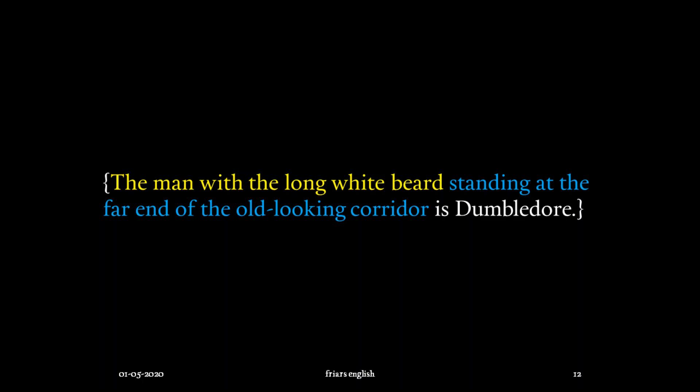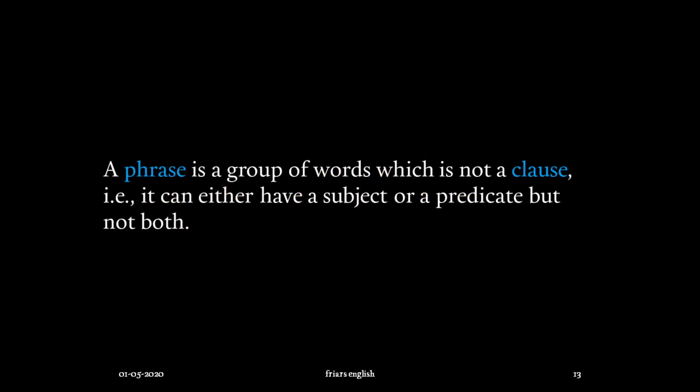A clause must contain both a subject and a predicate. The words in blue contain both an implied subject and a predicate, so we can call it a clause. A phrase, on the other hand, is a group of words which is not a clause — that is, it can have either a subject or a predicate, but not both. It doesn't have to have the same subject-predicate relationship that a clause must have.